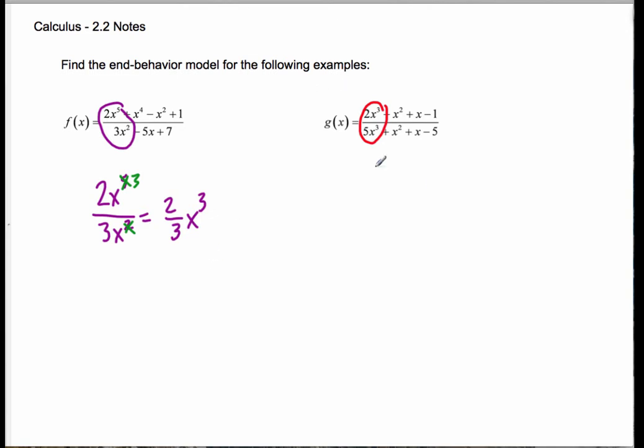Well, what about on the right? On the right, we're going to have 2x cubed over 5x cubed. And again, when we look for things that can factor out, the 2 fifths doesn't change, it's going to stay 2 fifths. But the x cubed divided by x cubed factors out. So we end up with an end-behavior model of 2 fifths. In other words, a horizontal line at y equals 2 fifths.